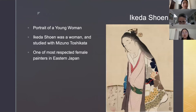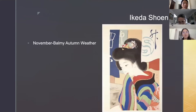Ikeda Shouen — 'Portrait of a Young Woman.' Ikeda Shouen was a woman who studied with Mitsuno Toshikada. She is one of the most respected female painters in eastern Japan. Another work: 'November Balmy Autumn Weather.'